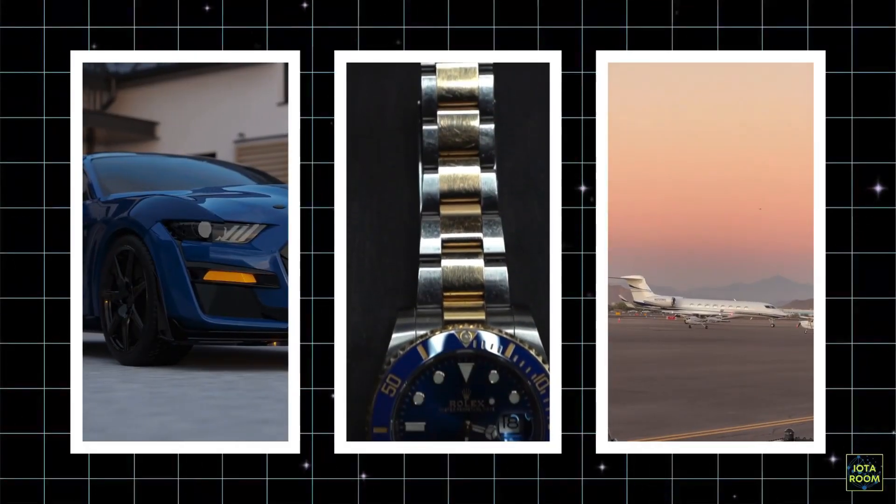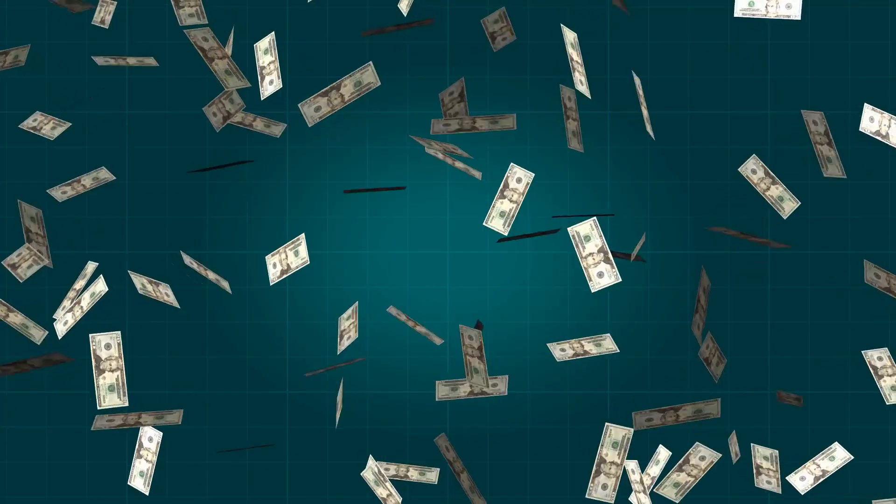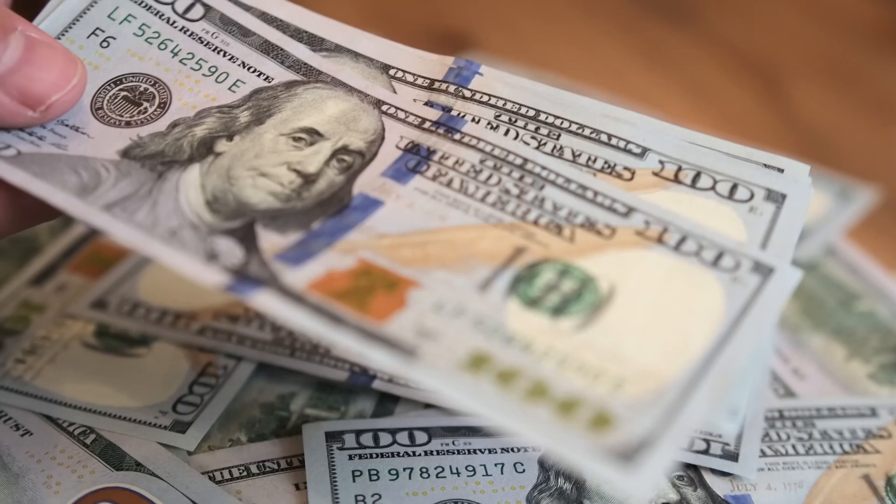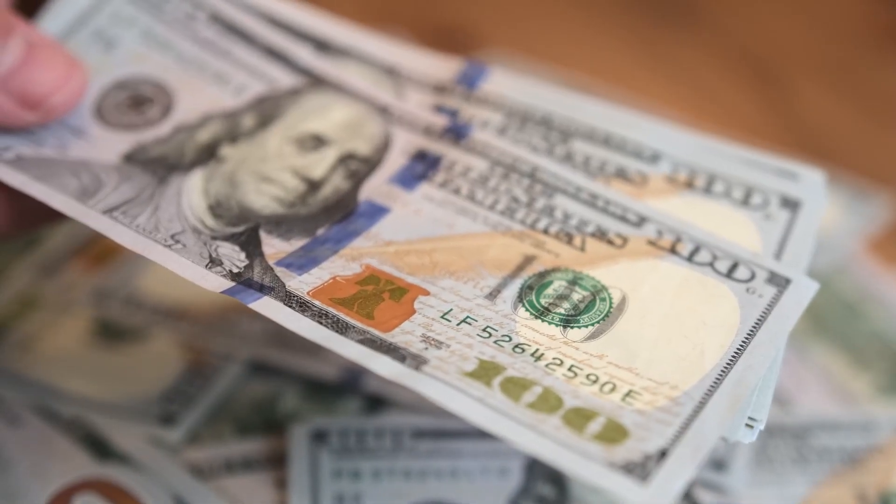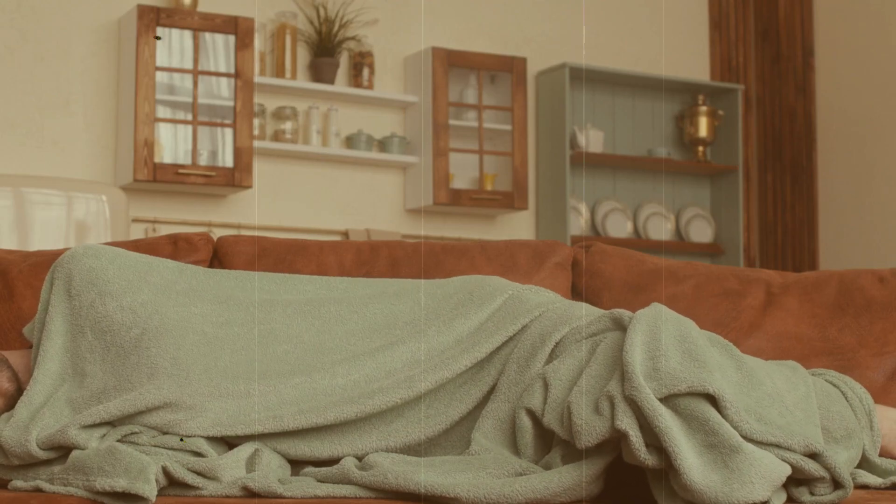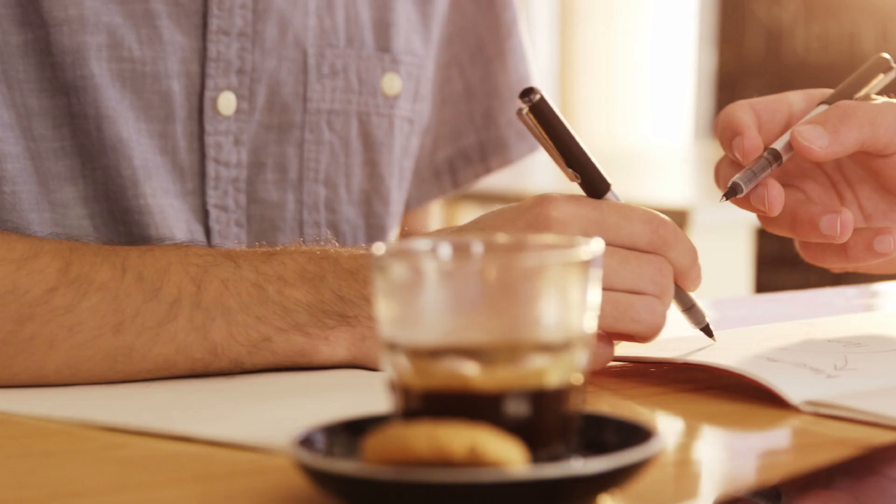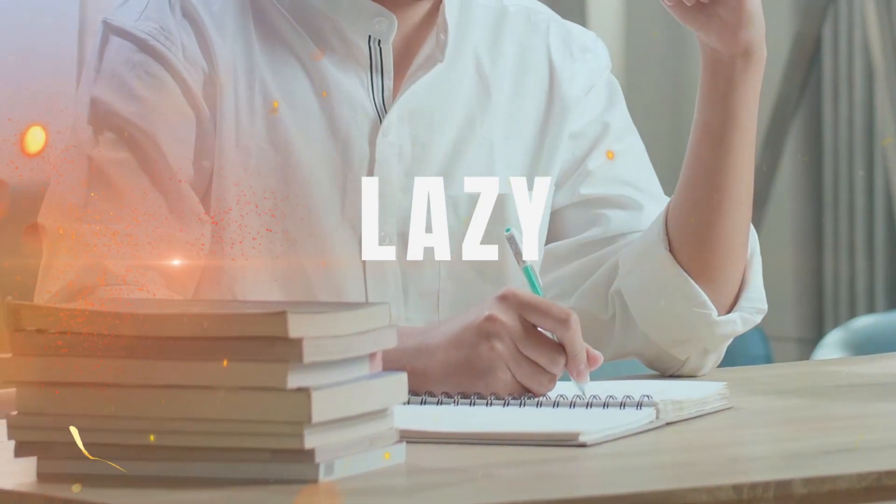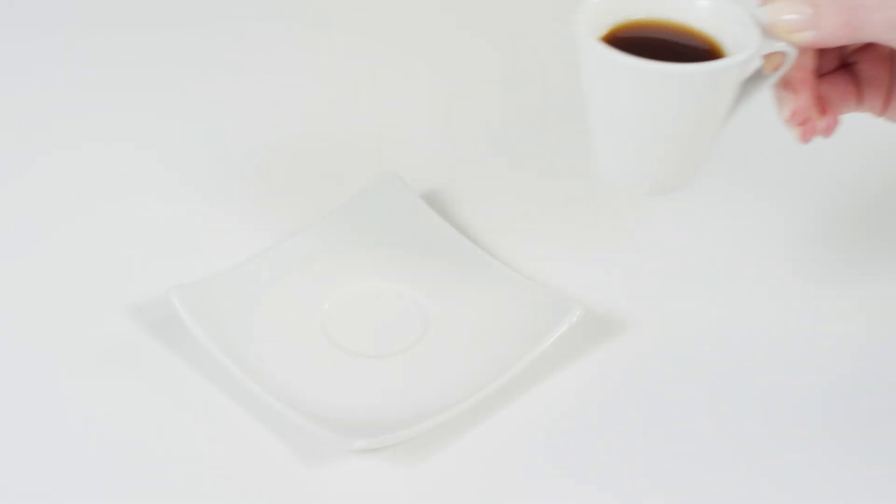Erdos didn't care about material possessions. He gave away most of his prize money, funded scholarships for young mathematicians and lived off the generosity of his colleagues. If you had a couch, he'd sleep on it. If you had a problem to solve, he'd help crack it. And if you weren't working fast enough, he'd call you lazy and pour you a cup of coffee himself.